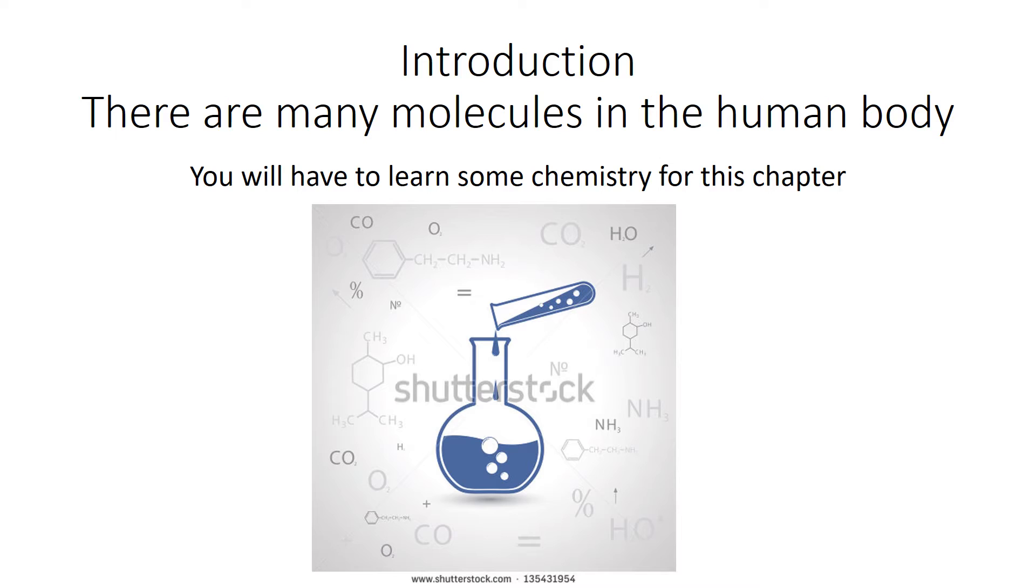There are many molecules in the human body. We don't really know exactly how many, but estimates put it around about 100,000 or so. But they usually fall into one of four classes of macromolecules. And to understand that, we're going to learn some chemistry.